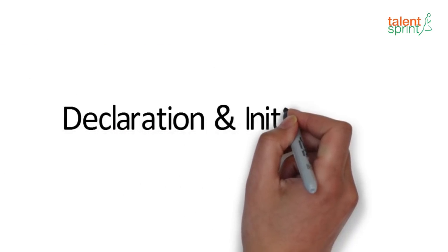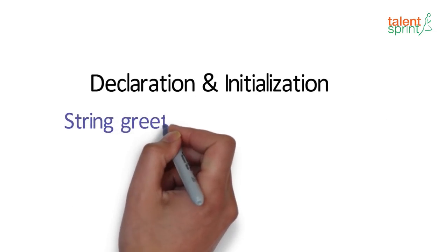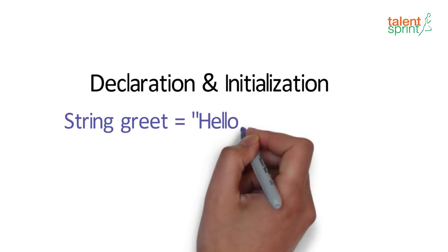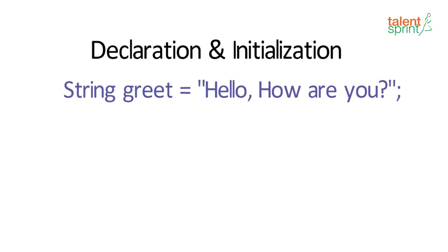Now let's move on to declaration and initialization. The first way is simple, as you see on the screen. Give the data type, followed by the variable name, and initialize the variable with the string value in double quotes.